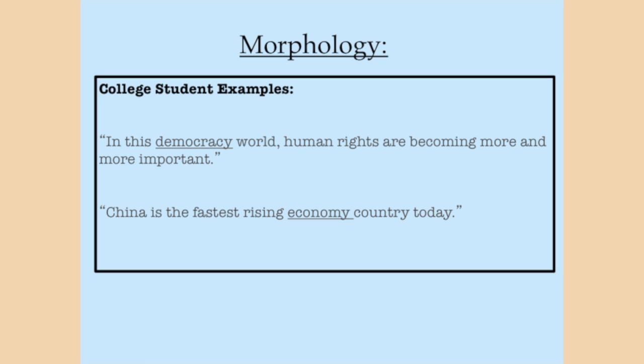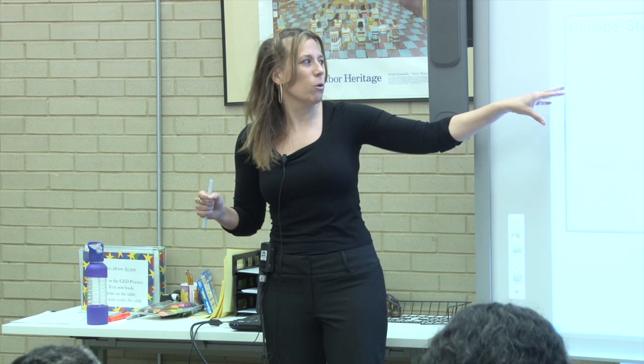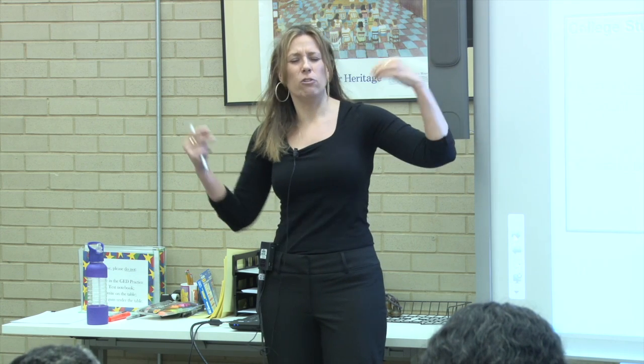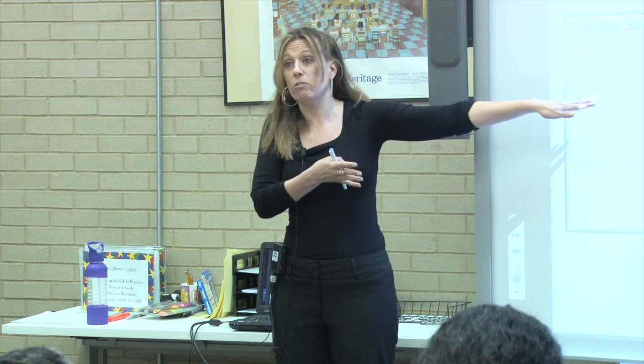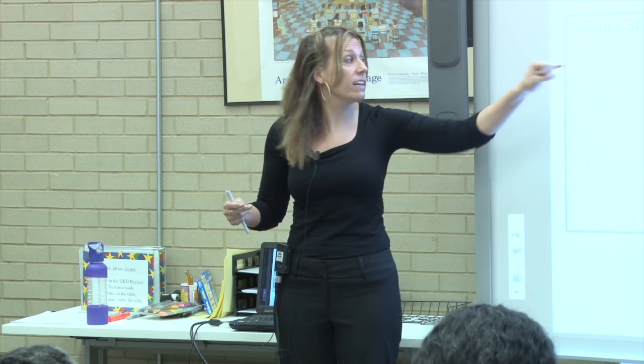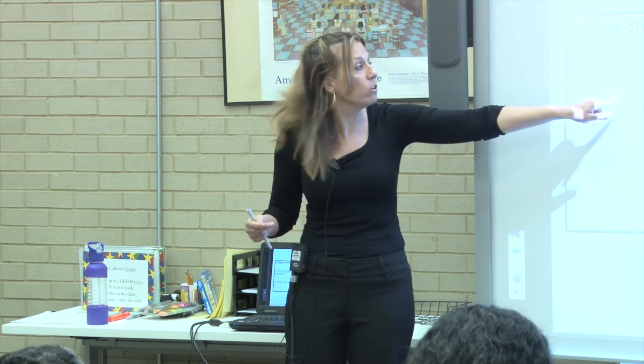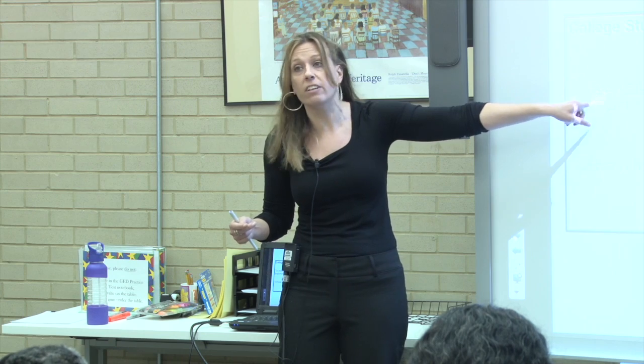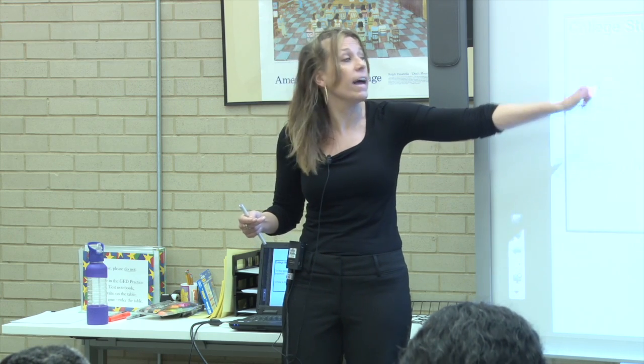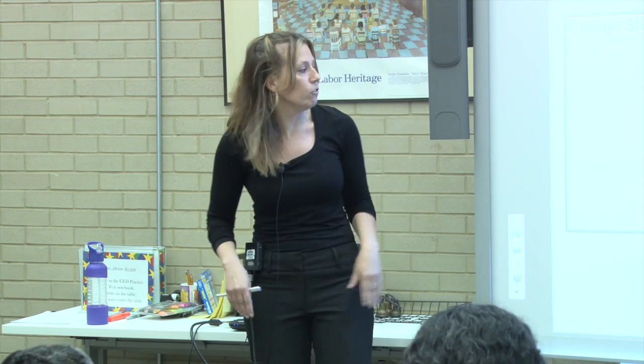'China is the fastest rising economy country today.' Again, going for something like 'economic,' right? They're taking a stab at it. But it's also frustrating as a student to know that you don't know — like, 'I know this isn't quite right. I want to say this but I don't know how.' Taking a stab is great, but let's help them by explicitly telling them: what you really need right here is an adjective to describe 'world.' Right now you're using a noun. This is the lesson — how you do it.